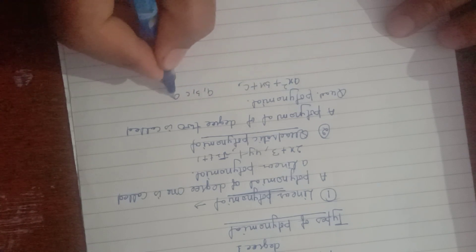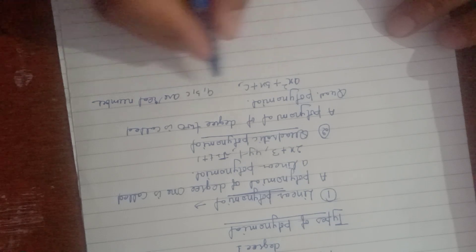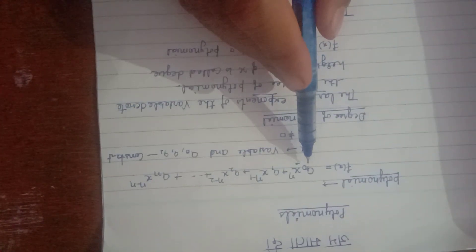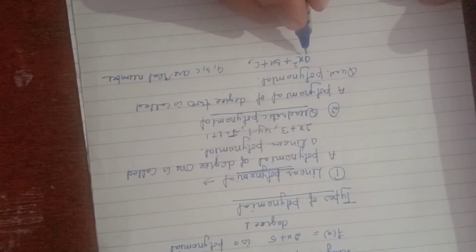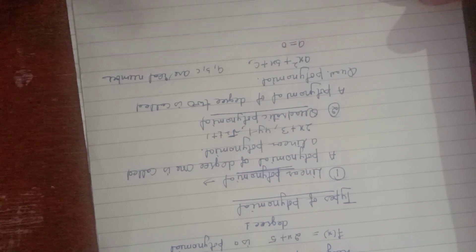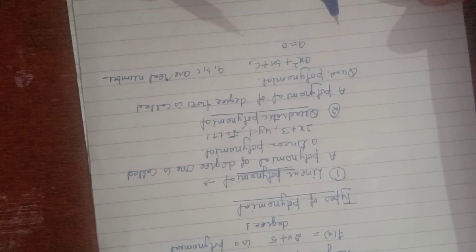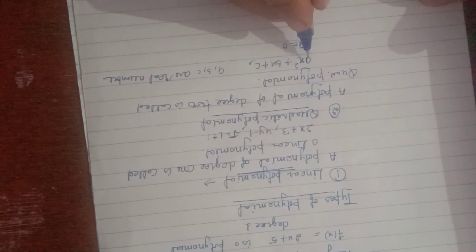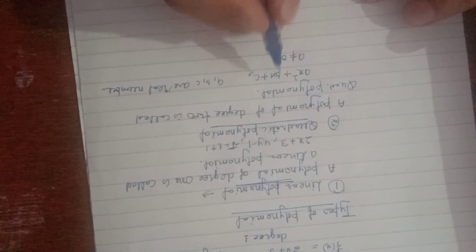Here, a, b, c are real numbers. One important condition: a is not equal to 0. If a were equal to 0, then the x² term would vanish — the coefficient of x² would be 0 — and the polynomial would no longer be degree 2. So the coefficient of x² must not be 0, meaning a ≠ 0.